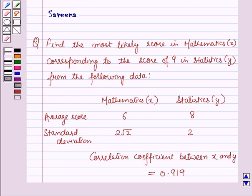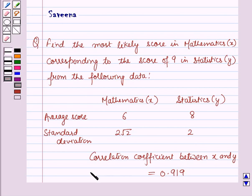Hello and welcome to the session. In this session we will discuss a question which says: find the most likely score in mathematics corresponding to the score of 9 in statistics from the following data. The average score in mathematics is 6 with a standard deviation of 2√2, the average score in statistics is 8 with a standard deviation of 2, and the correlation coefficient between x and y is 0.919.